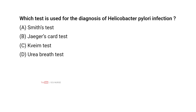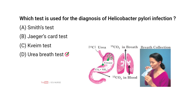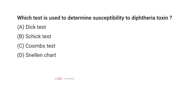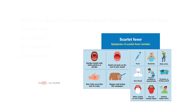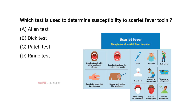Which test is used for the diagnosis of Helicobacter pylori infection? Correct answer D: Urea breath test. Which test is used to determine susceptibility to diphtheria toxin? Correct answer B: Schick test. Which test is used to determine susceptibility to scarlet fever toxin? Correct answer B: Dick test.